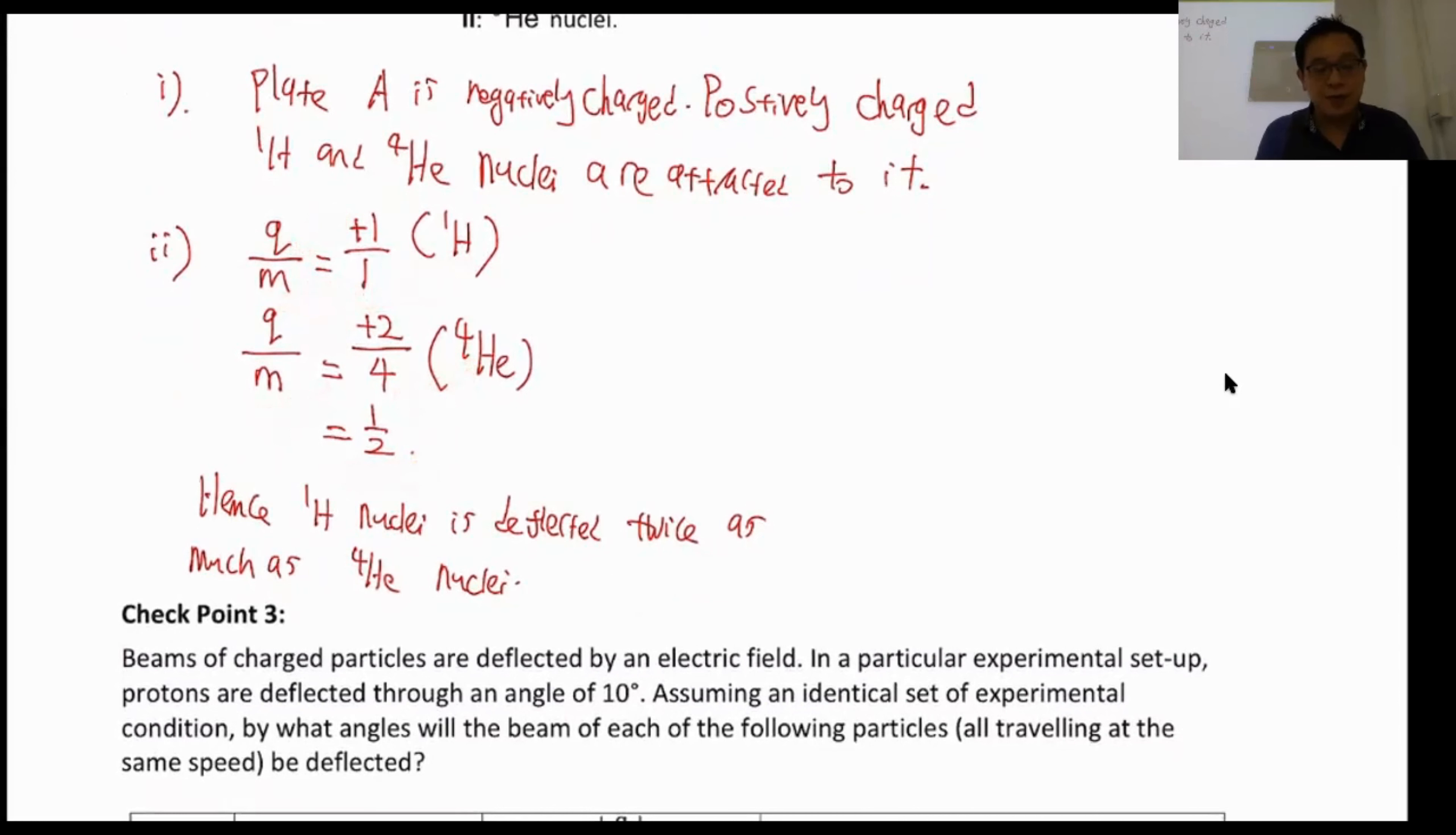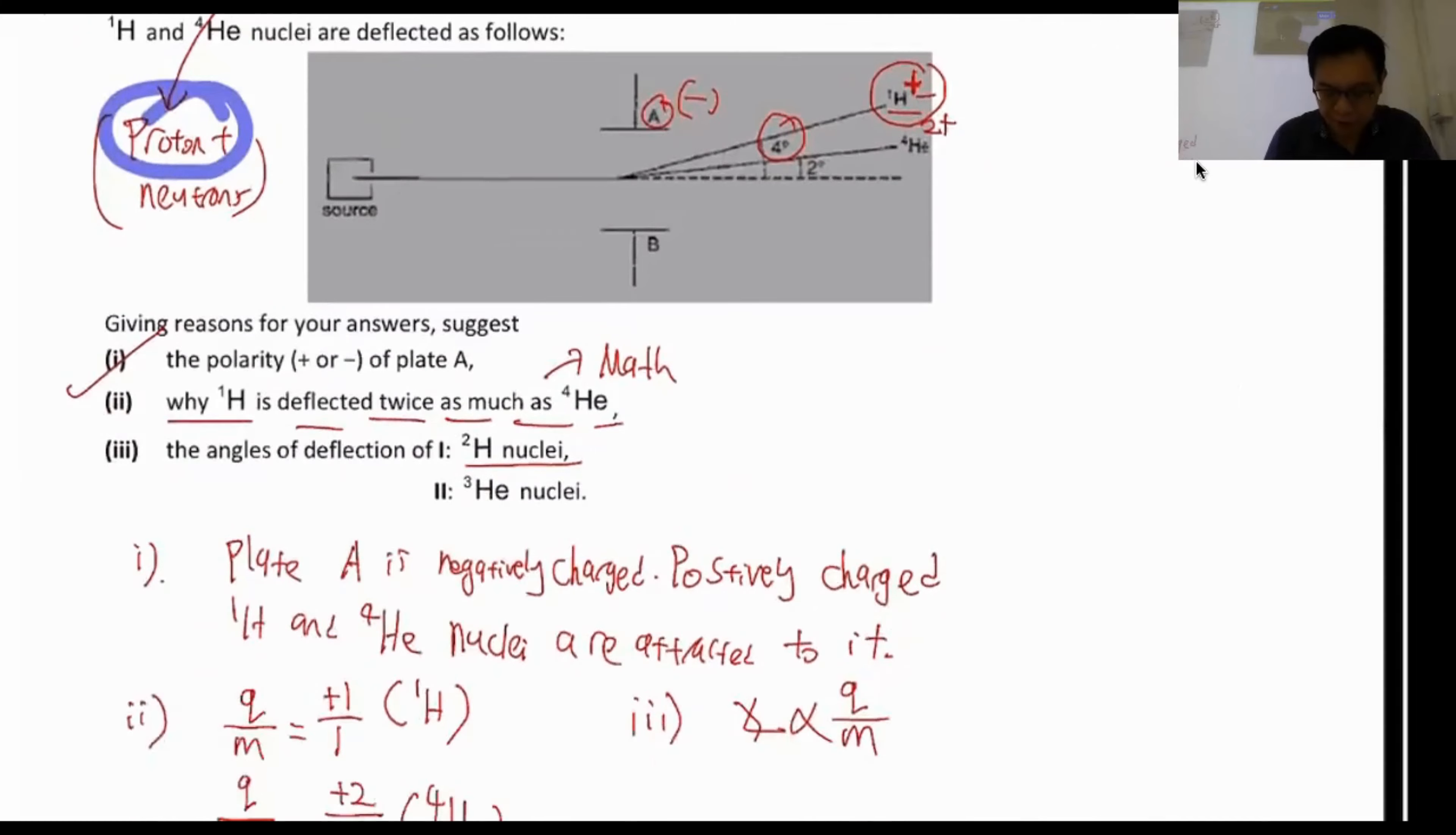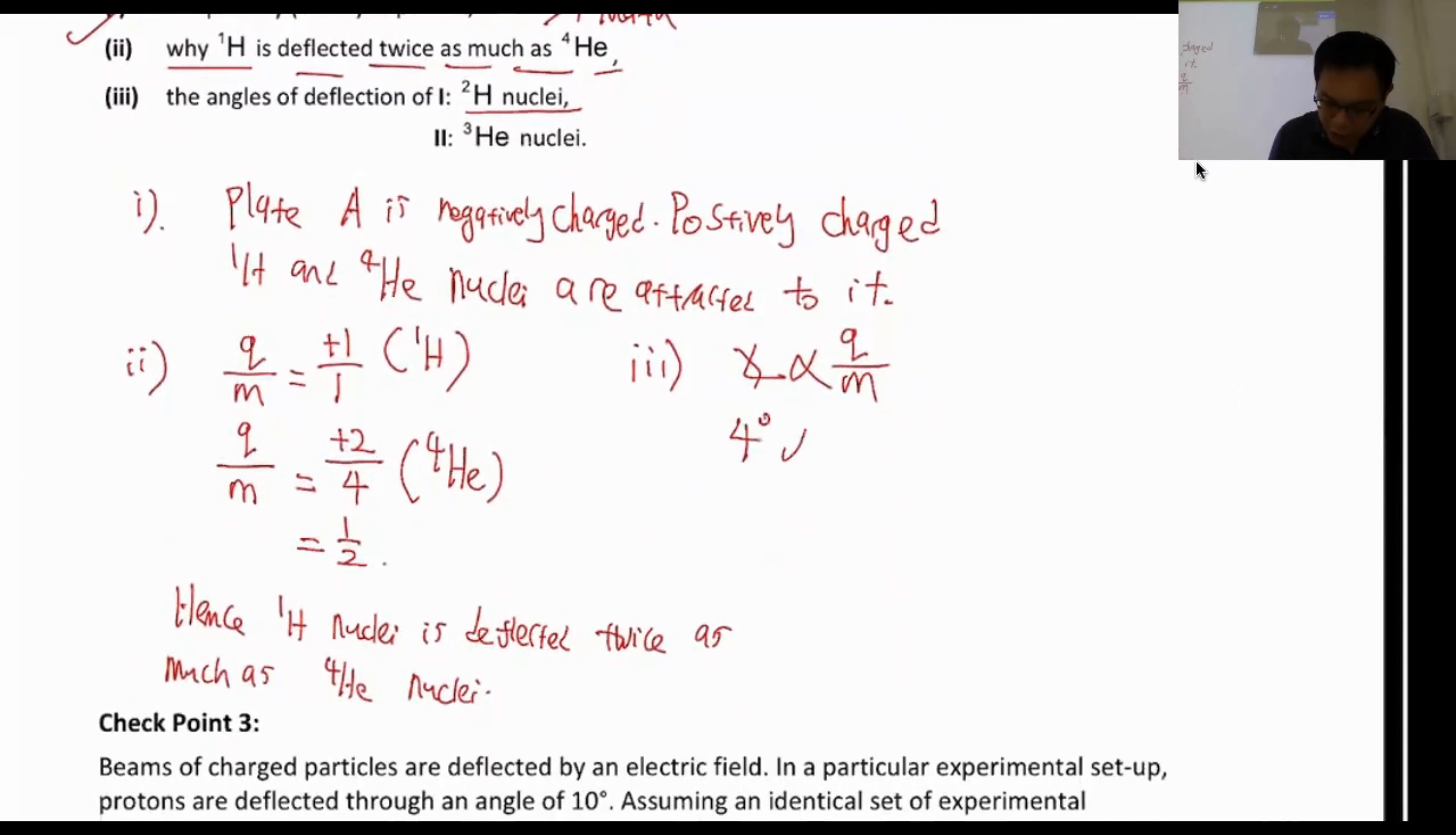So this is explanation in terms of why something is twice, sometimes three times. So same method. Now, part three is calculating angle of deflection. Now, there are many, many methods to approach these questions. I will show you my method. My method is not necessarily the best. I think it's the method I find that is most comfortable with me. Remember, the best method is always the method that is most comfortable for you. So for part number three, angle of deflection for ²H-nuclei. So what I like to do is write down angle of deflection is proportionate to charge over your mass. Angle of deflection for the first one, I think it's about, let's see, your proton is 4°. So let me write down 4° proportionate to plus 1 over 1. This is equation 1.